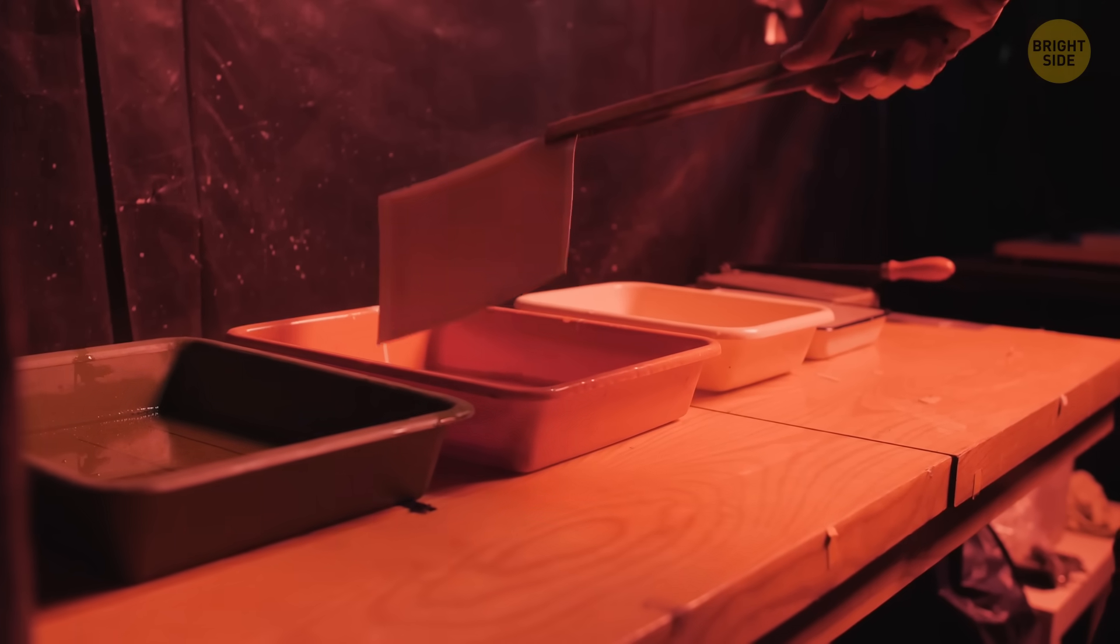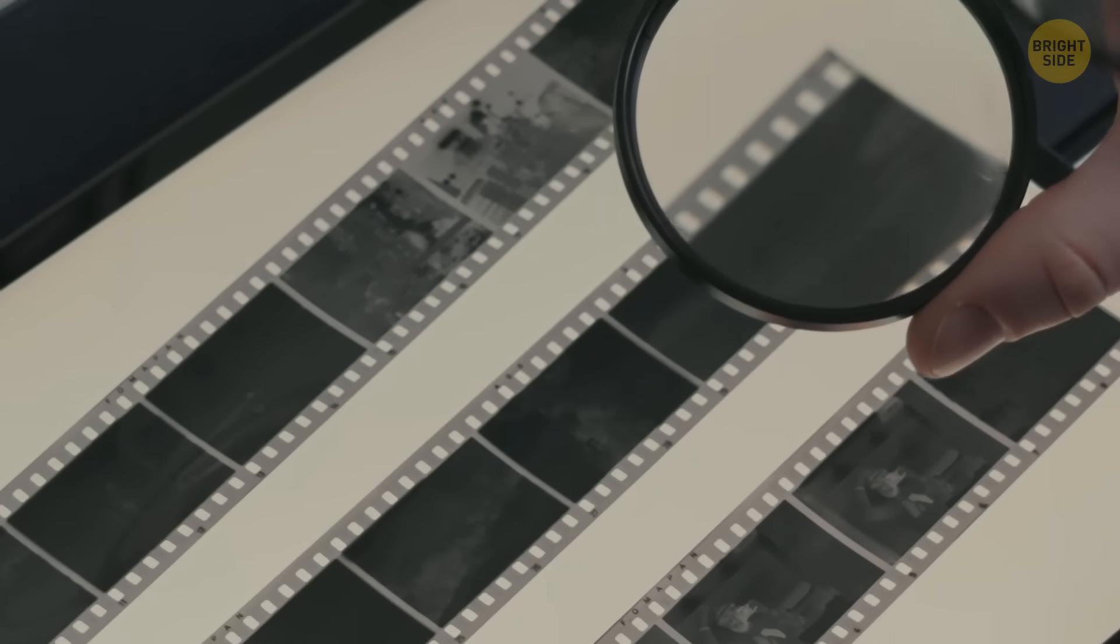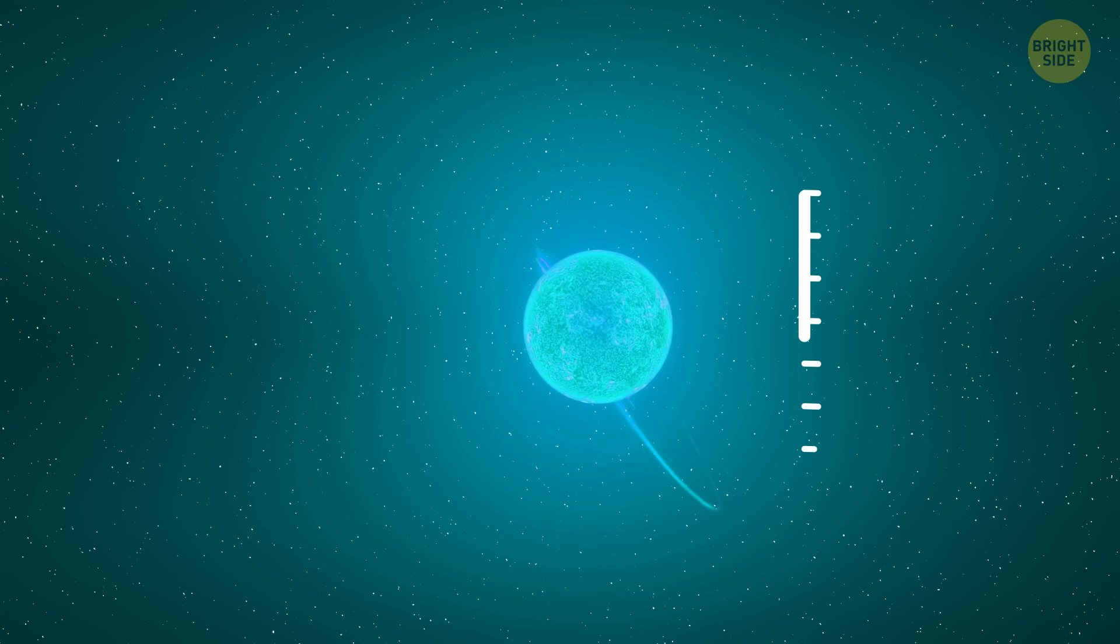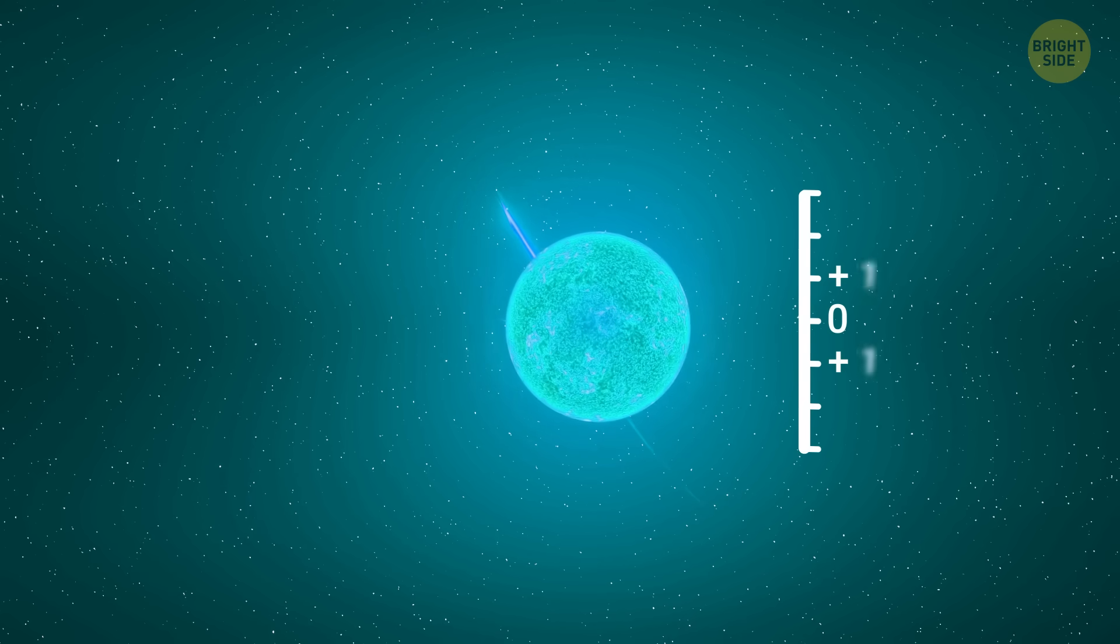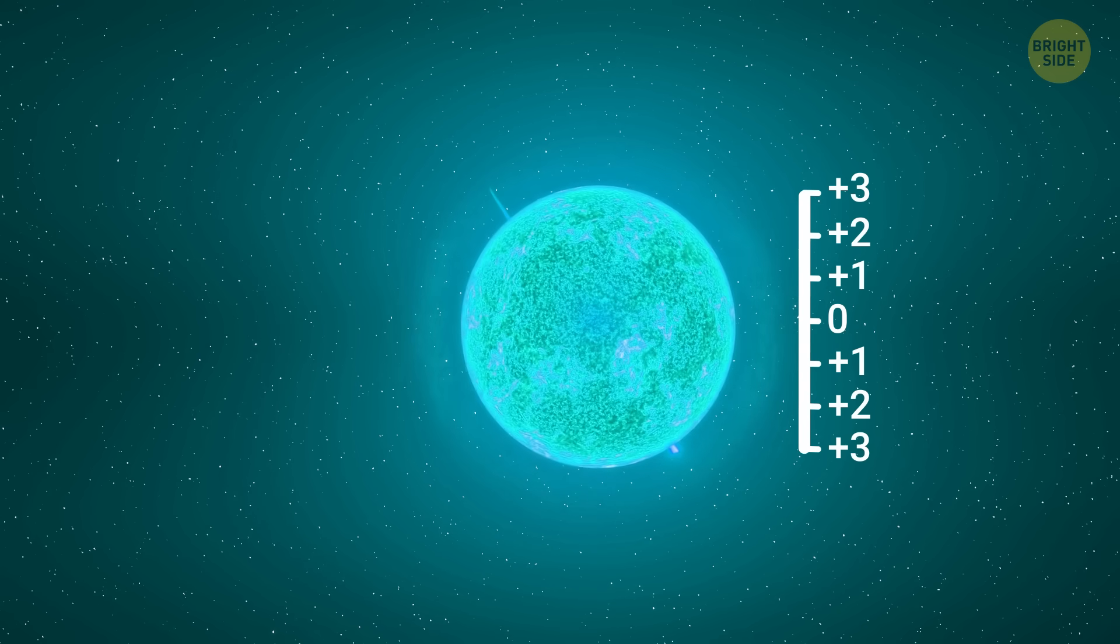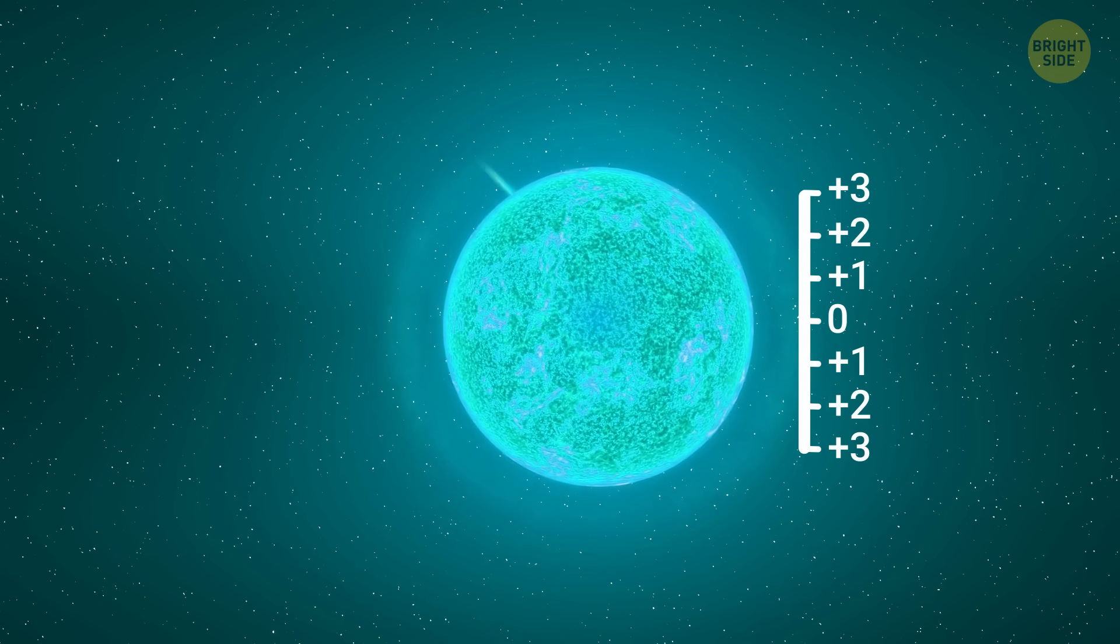Around two decades later, an amateur astronomer broke down Vega's light to reveal various elements making up the star. In 2006, thanks to telescopic observations, scientists found out that Vega was whipping around so fast that its poles were several thousand degrees warmer than its equator.